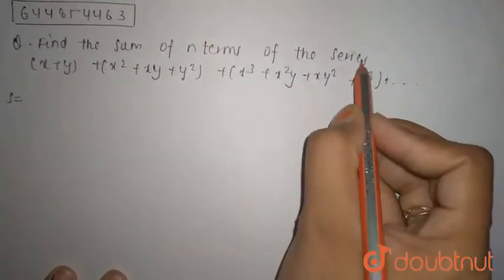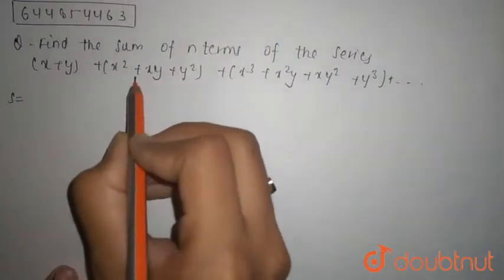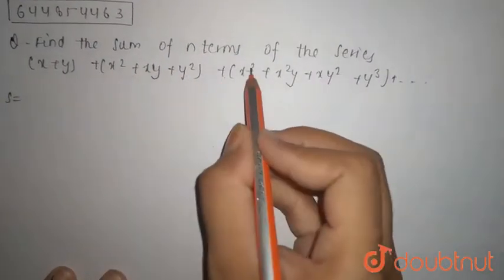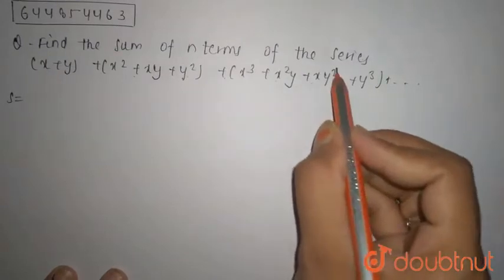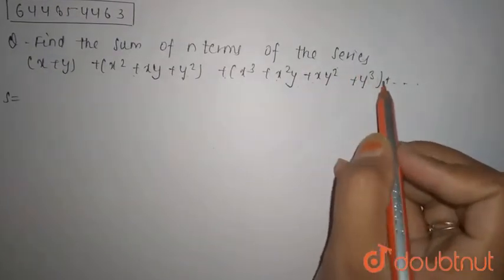Find the sum of n terms of the series: (x+y) + (x²+xy+y²) + (x³+x²y+xy²+y³) + ...